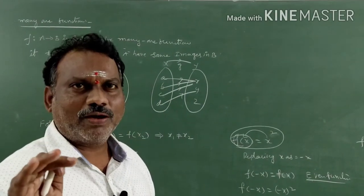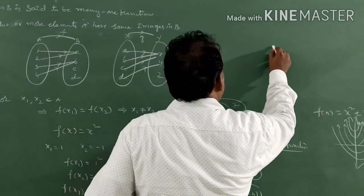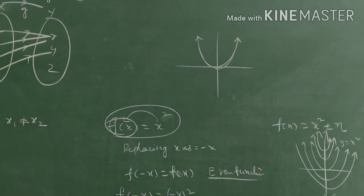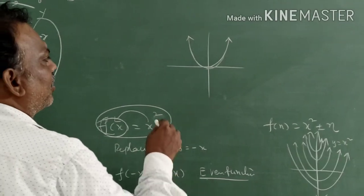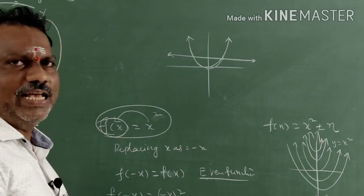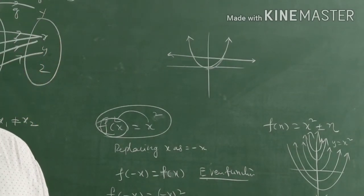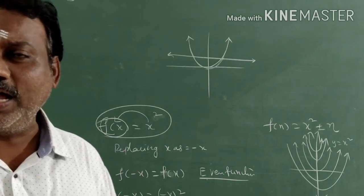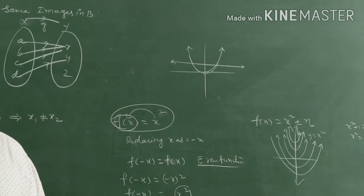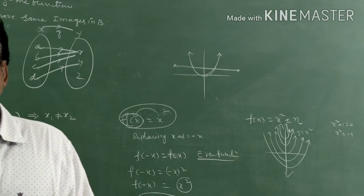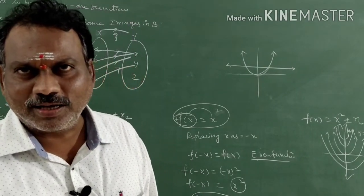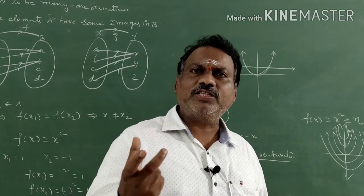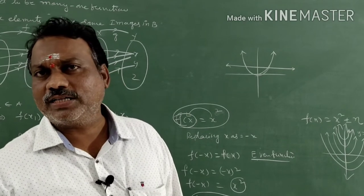For many-one functions we also have a graphical test. f(x) = x² is an even function and we confirmed it is many-one. Draw a line parallel to the x-axis — if it intersects the graph at least at two points, it is many-one. At least two points means minimum two intersections. Such a graph is called a many-one function.